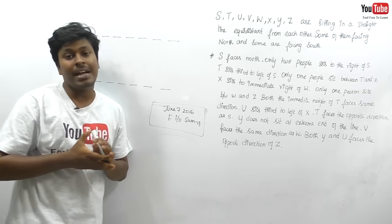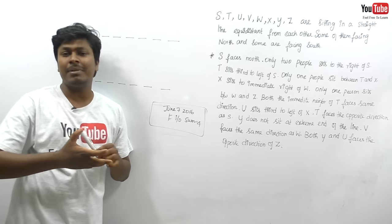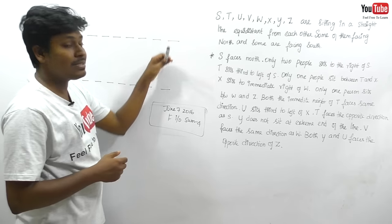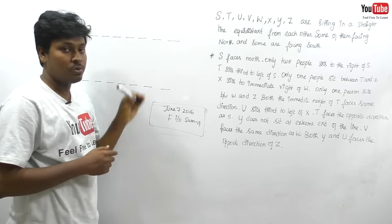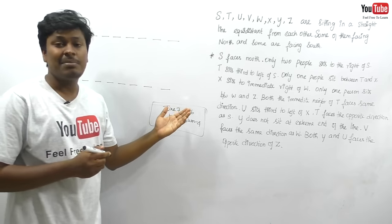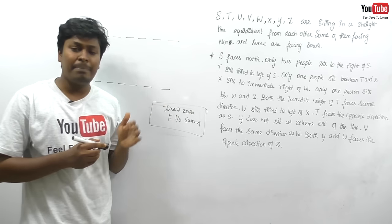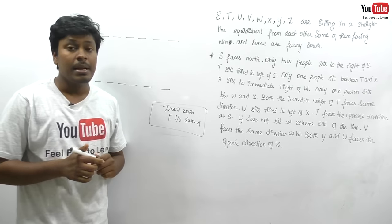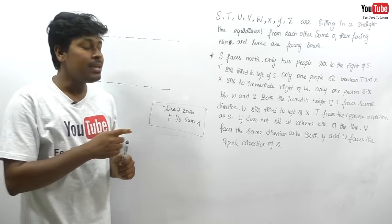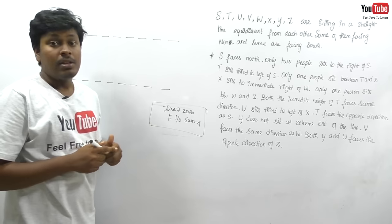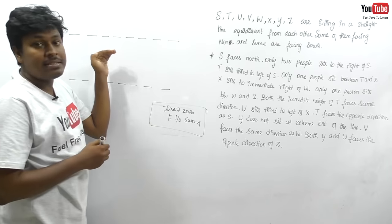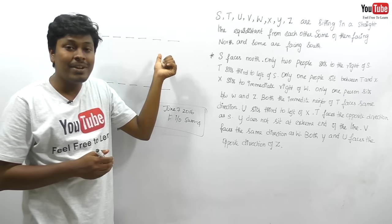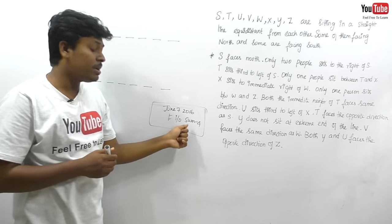Because it is a different kind of arrangement. Though you solve different arrangements by referring to many books and practice sets, you can see a question where some are facing south and some are facing north in two rows, or some facing east and some facing west. But in this question, 8 people are sitting in a straight line where some face north and some face south.